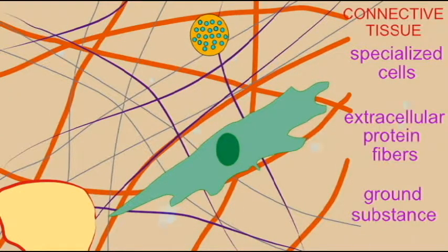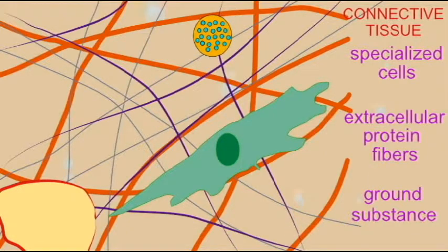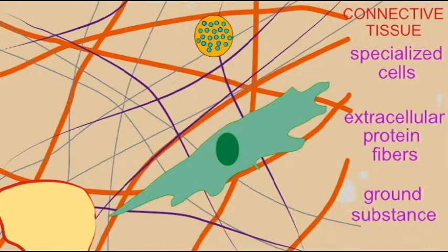So these three components - specialized cells, extracellular protein fibers, and a ground substance - define connective tissues.